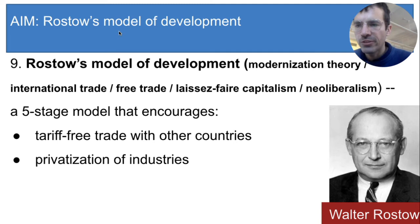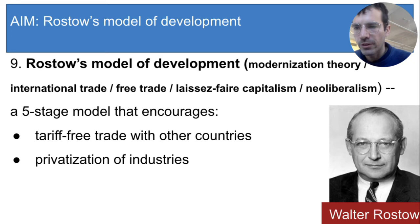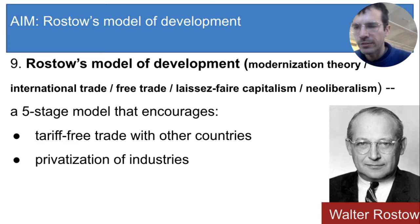Second, privatization of industries. That means that every business or service should be run by private investors, not by the government. And if the government already controls an industry, Rostow says that it should be sold off to private companies. According to Rostow's model, there should be no government-run industries, and that is another big contrast to the self-sufficiency model.